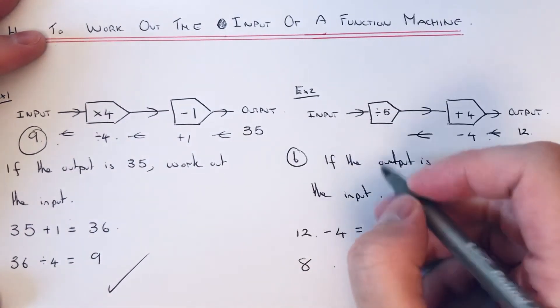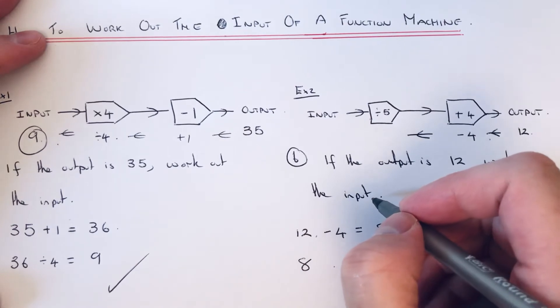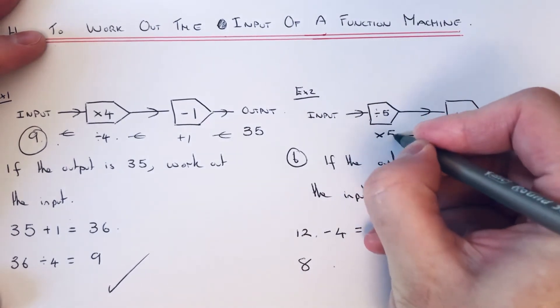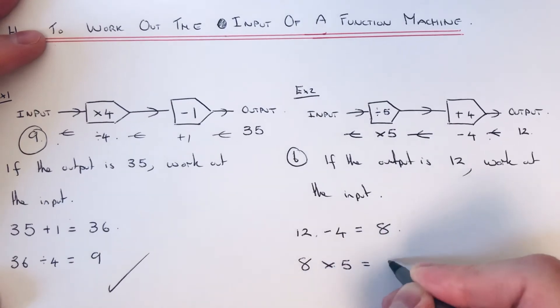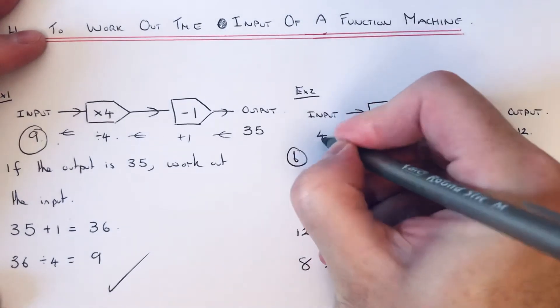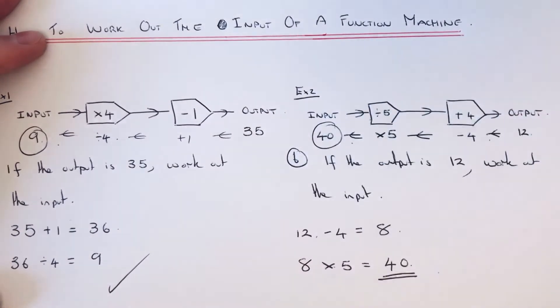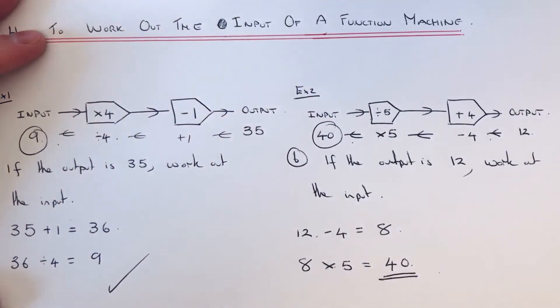Then we've got to do the next inverse, which is the opposite to divide by 5. So that is times 5. So 8 times 5 gives an answer of 40. So again, let's just check to see if that answer is correct by putting 40 into the function machine.